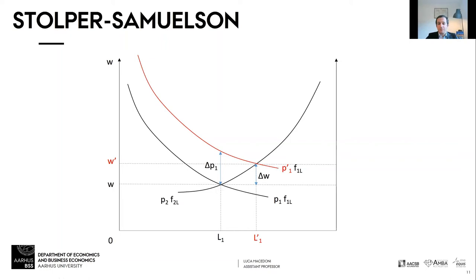Does this mean workers are better off? We don't know. The wage increases, but by less than the price of good one — so workers can actually buy fewer units of good one. However, the price of good two did not change, so if wages rose and good two's price is constant, workers can buy more units of good two. The effect on workers is therefore ambiguous, driven by consumer preferences.